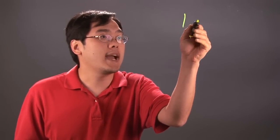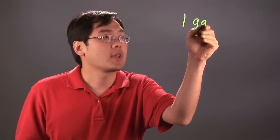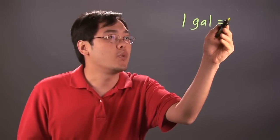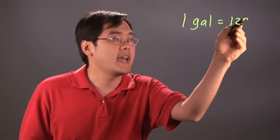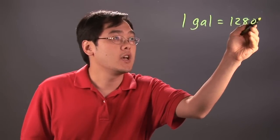Hi, I'm Jimmy Chang. We're here to talk about the gallon per ounce ratio. Now in order to form this ratio, you really have to know this one particular conversion and you'll be good to go. One gallon is equal to 128 ounces.